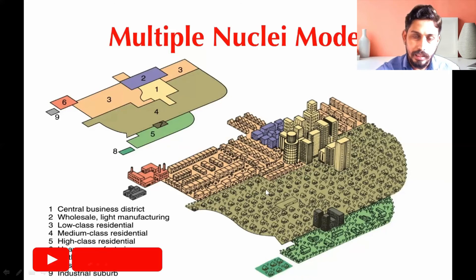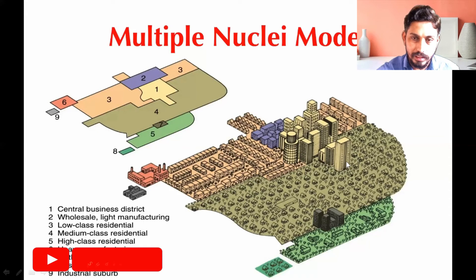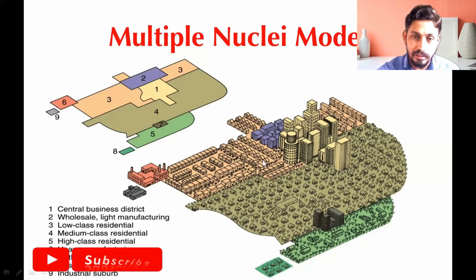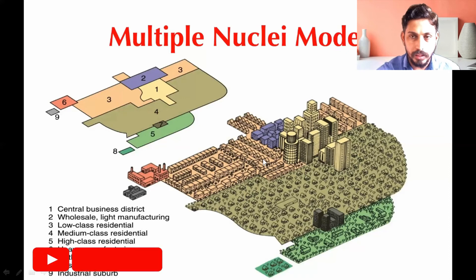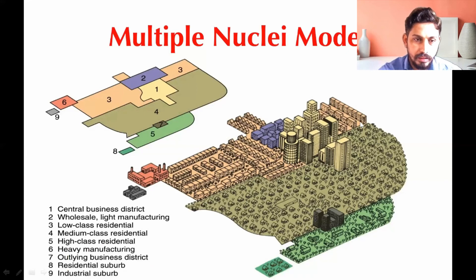Unlike the concentric zone theory and sector theory, which described a single-centered city with a rigid structure, the multiple nuclei model takes into consideration that city structure is not rigid. It varies from city to city and depends on what kind of topography is present and what the history of that city is.